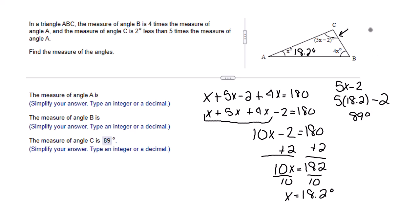Angle C is 89 degrees. Let's find B. Now we could do it one of two ways. We could say 180 degrees minus 18.2 minus 89.